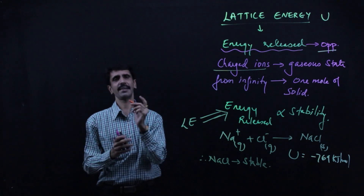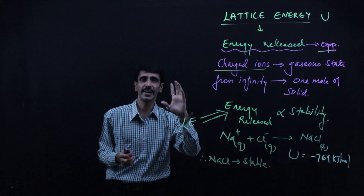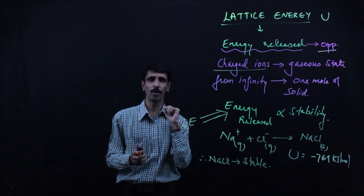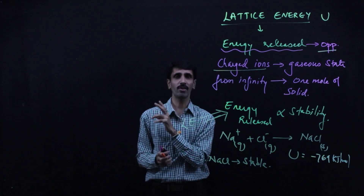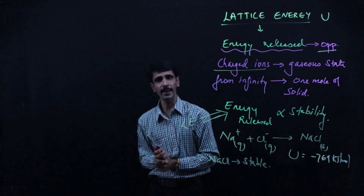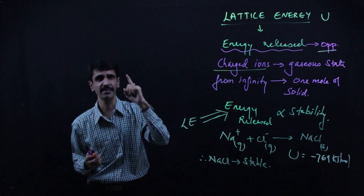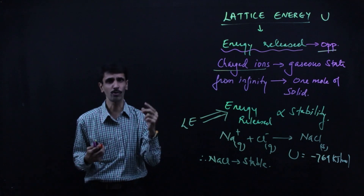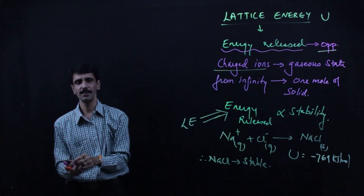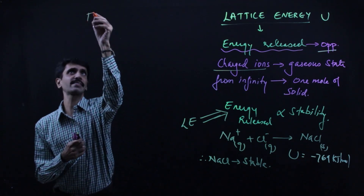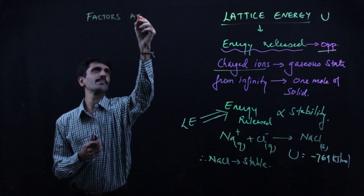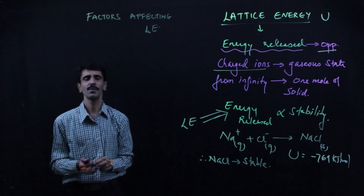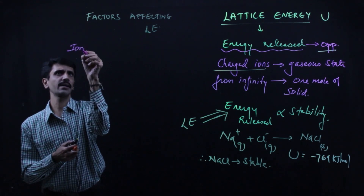Therefore NaCl is stable because of its higher lattice energy. From the lattice energy value we can determine whether the resulting ionic compound is stable or not, and we can also do comparisons. Now we will talk about the factors affecting lattice energy. I'll explain in as simple words as possible. The first factor is ionic radius.